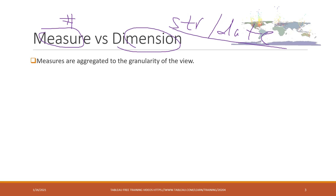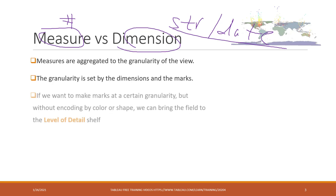Measures are aggregated to the granularity of the view — that is a very important concept in Tableau. When we bring numbers into the view, they are always aggregated to the granularity of the view. Depending on how many marks you set in the view, that decides the number of markers and aggregation levels. The granularity is set by the dimensions and the markers. If we want markers at a certain granularity without using markers like colors or shapes, we can bring the field into the level of detail shelf.